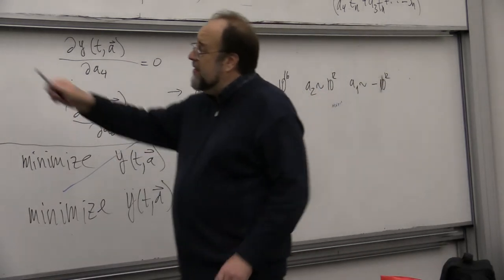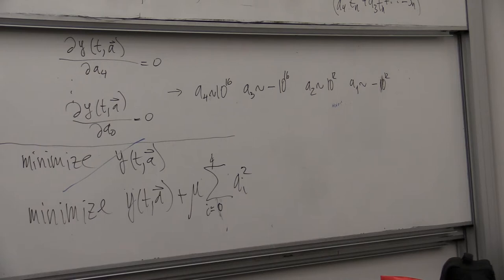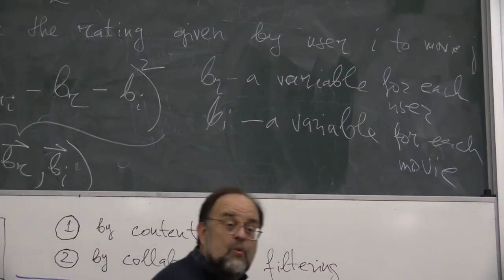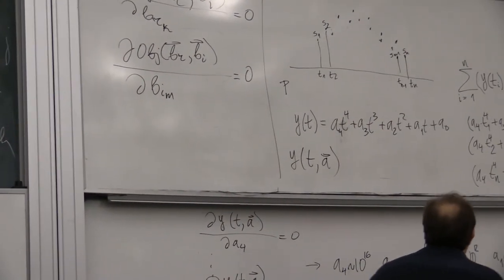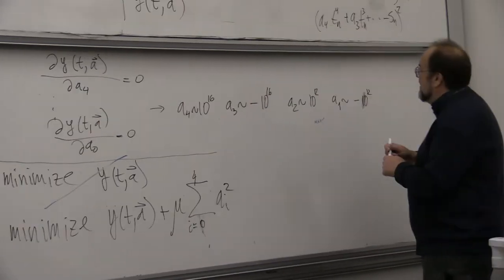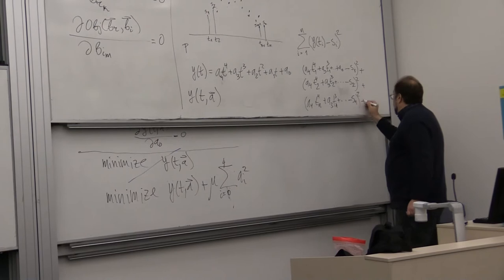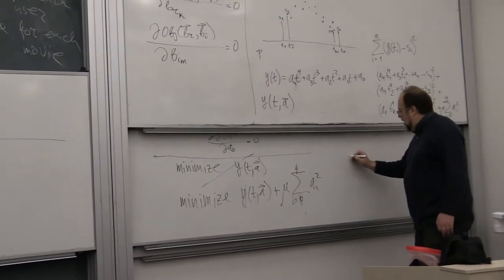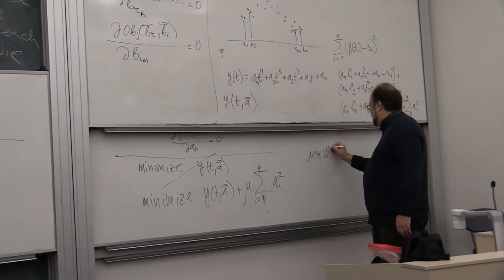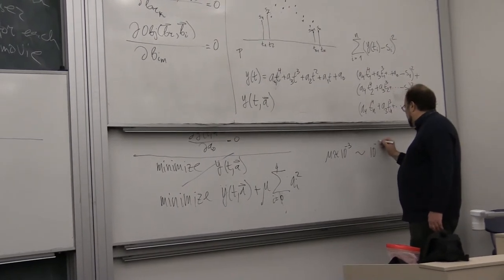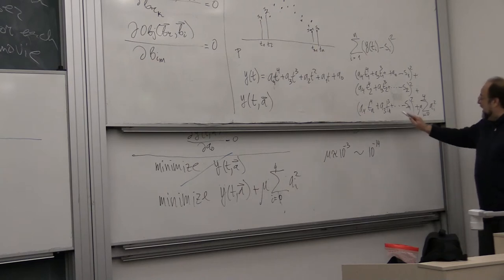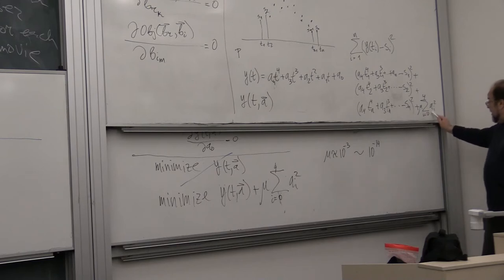In our case, instead of minimizing just the original objective, we add a μ factor times the sum of the squares of the variables. μ is usually of the order between 10⁻³ to 10⁻¹⁴, depending on the particular problem at hand.